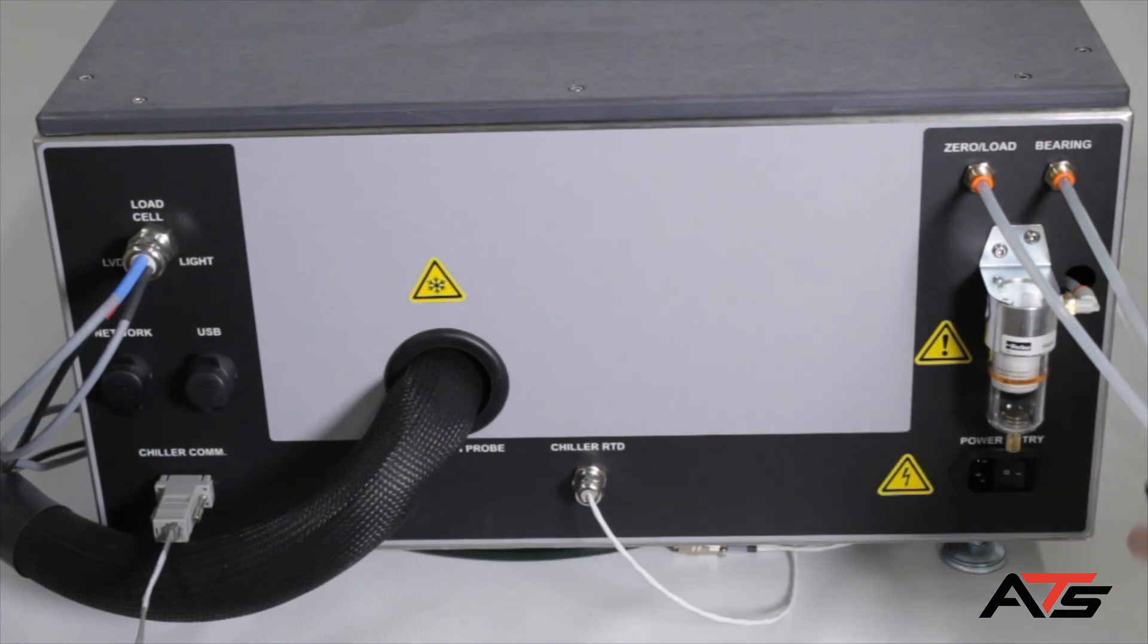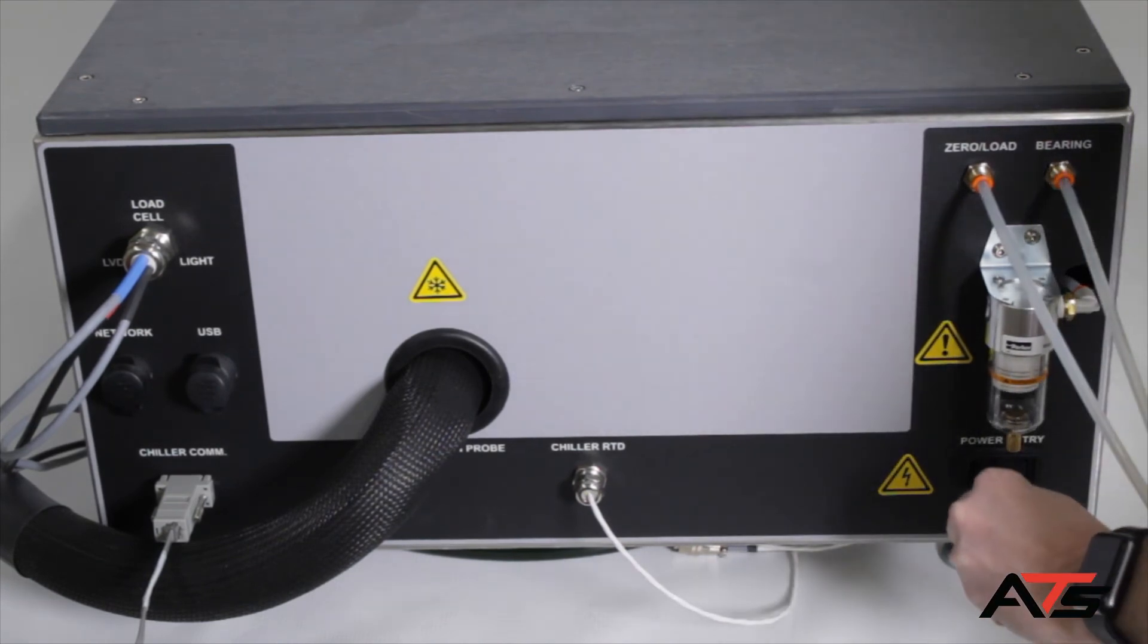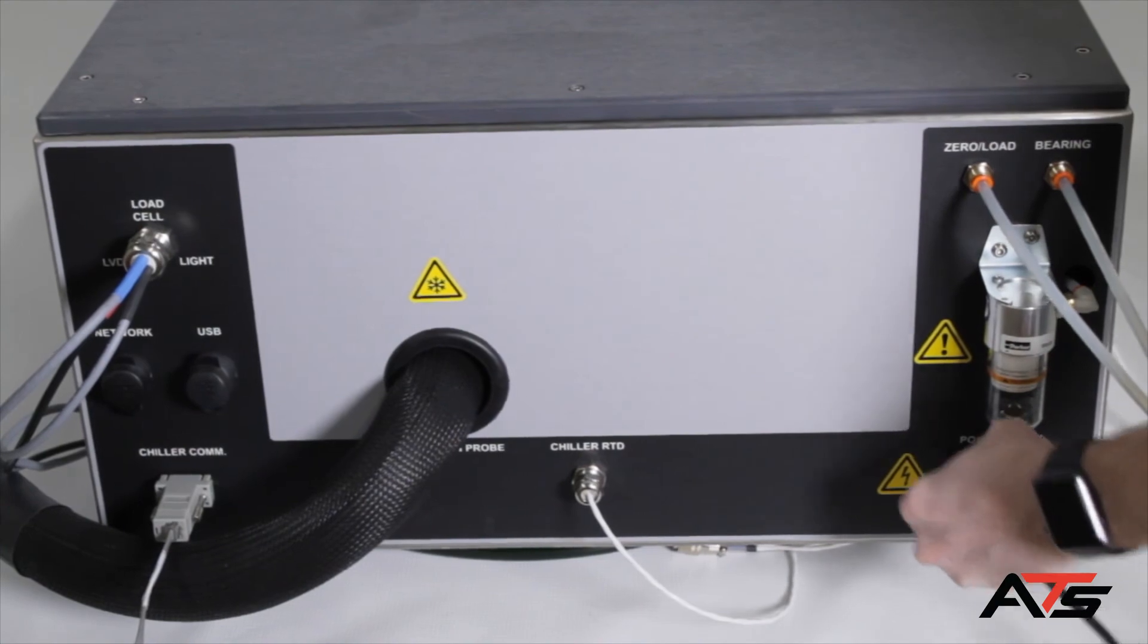Plug the power cables into the base unit and the refrigeration unit, then plug them into a surge-protected power source of appropriate voltage.